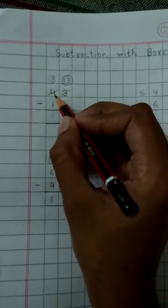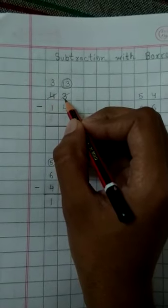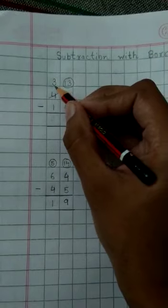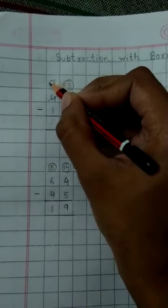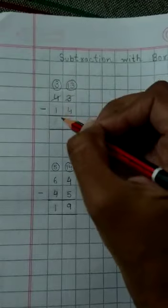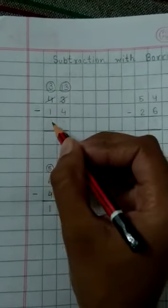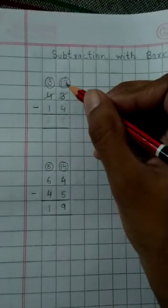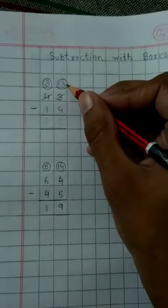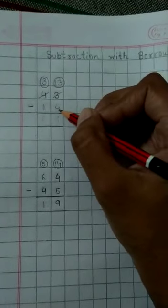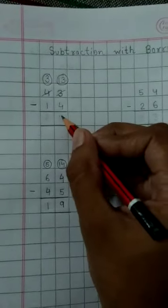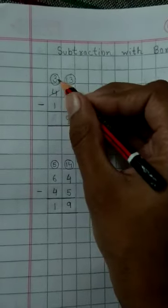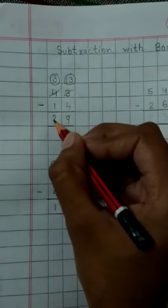Because 4 has given 1 digit to 3, now here we have 3 and here we have 1. So now we will be subtracting 1 from 3. So when we subtract 4 from 13, answer is 9. And when we subtract 1 from 3, answer will be 2.